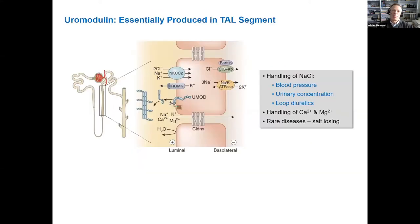Uromodulin is made in the kidney in a very specific location: the thick ascending limb of the loop of Henle. All of us interested in Mendelian disorders know that this segment of the kidney tubule is of particular relevance for salt reabsorption, and that mutations in systems operating in this part of the tubule are responsible for the various types of Bartter syndrome.